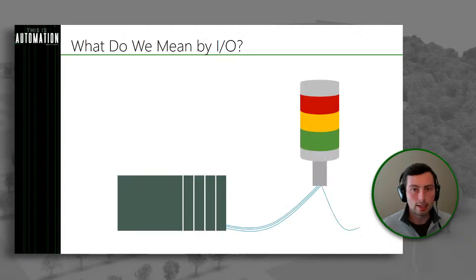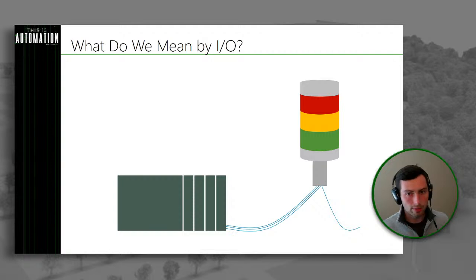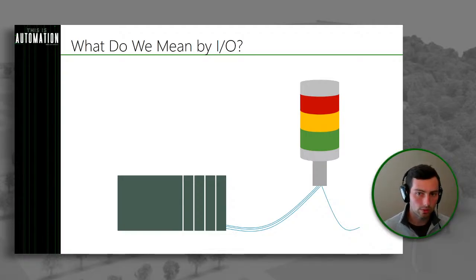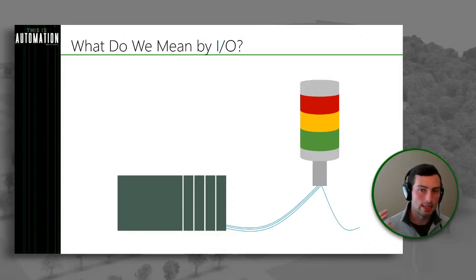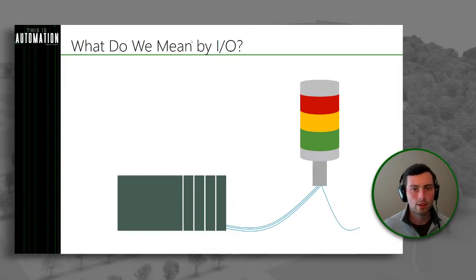Let's look at an example of an output. The easiest one would be something like a light — let's take the example of a stack light. In this case, we've got our stack light, our PLC module with IO cards, and we're going to wire that stack light back to an output module. Typically it's going to be multiple wires back to the output card so we can independently control the different lights in that stack light. This is where things start to get confusing — the PLC is really acting as the switch here. That output card is switching on or switching off to ultimately affect the load, which in this case would be our stack light.